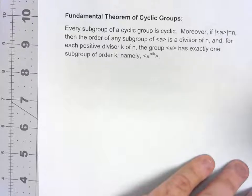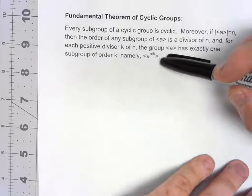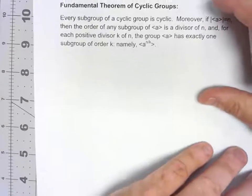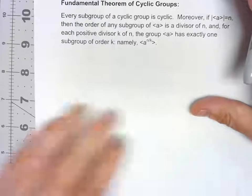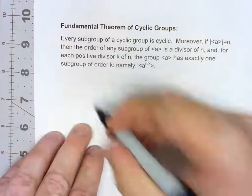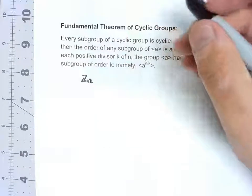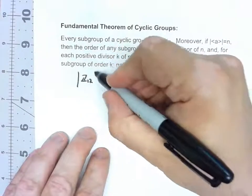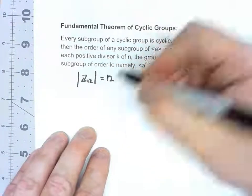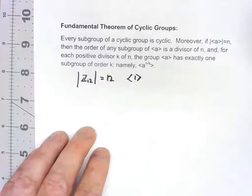It says that it has a subgroup of that order and that there's only one of them. And it even says what it is. It tells us what the generator would be for that subgroup. I'm not going to prove this. Let's see how it works in action. Let's consider the group Z12. So obviously the order of that is 12 and it's also generated by 1.